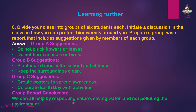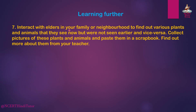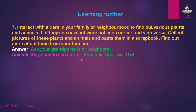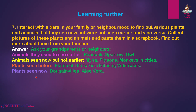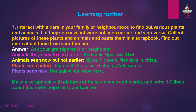Question 7: Interact with elders in your family or neighborhood to find out various plants and animals that they see now but were not seen earlier, and vice versa. Collect pictures and paste them in a scrapbook. Answer: Ask your grandparents or neighbors about animals they used to see earlier — Peacock, Sparrow, Owl. Animals seen now but not earlier — myna, pigeons, monkeys in cities. Plants seen before — flame of the forest (Palash), wild roses. Plants seen now — bougainvillea, aloe vera. Make a scrapbook with pictures of these animals and plants and write 1-2 lines about each with help from your teacher.